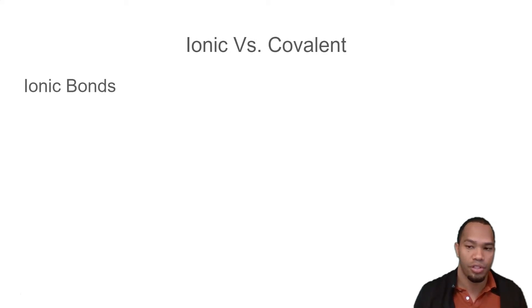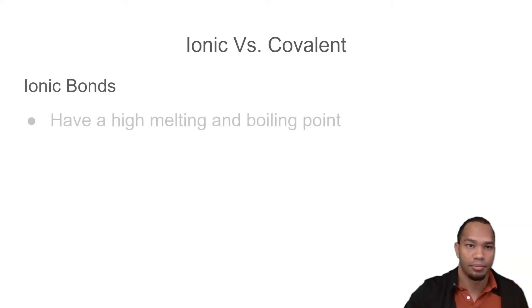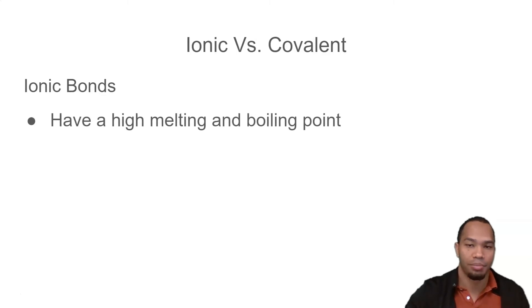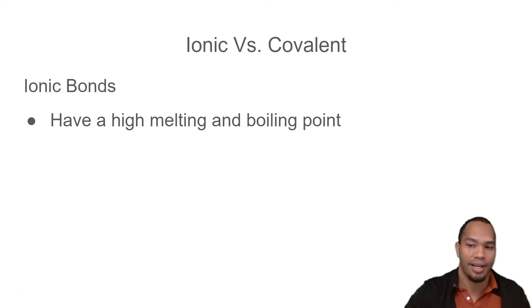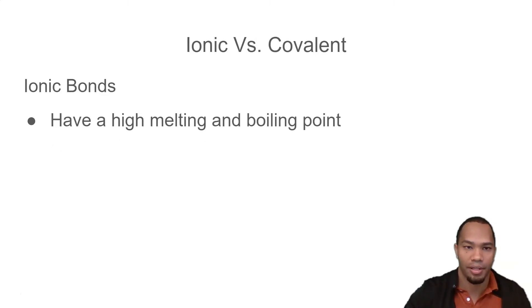The first thing is ionic bonds. Ionic bonds have a high melting point and a high boiling point. So if you're analyzing data and you're looking at a high number, then you're dealing with an ionic bond.